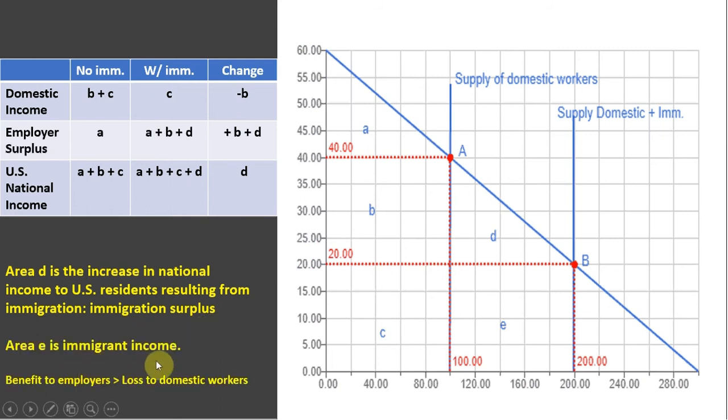Area E, which I didn't highlight earlier, would represent immigrant income. And overall, the benefit to employers is greater than the loss to domestic workers. So the benefit to employers is they gain B plus D due to immigration. Workers lose area B. So overall, there is a positive effect here.